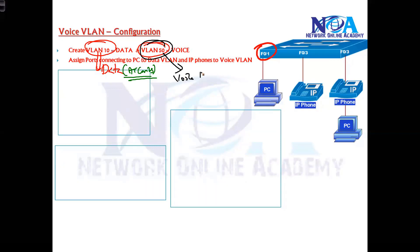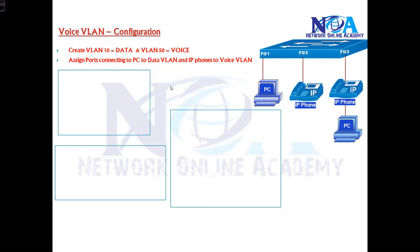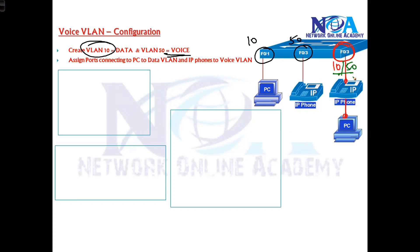VLAN 50 will be the voice VLAN — for accounts or any other department. Port number one will be a member of VLAN 10 because it connects to a computer, and port number three will be a member of VLAN 50 because it connects to a VoIP IP phone. But port number three also connects to a PC, which means this port will be a member of both VLAN 10 and VLAN 50 — VLAN 10 for data and VLAN 50 for voice.